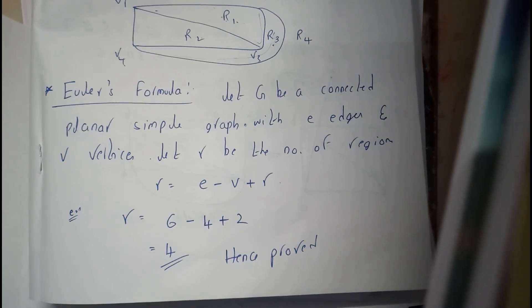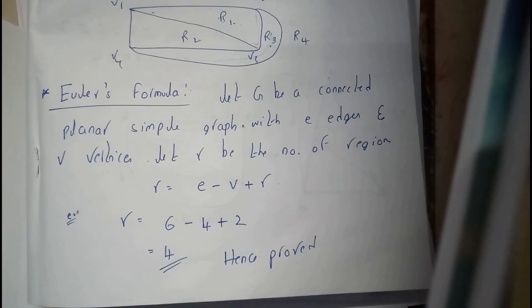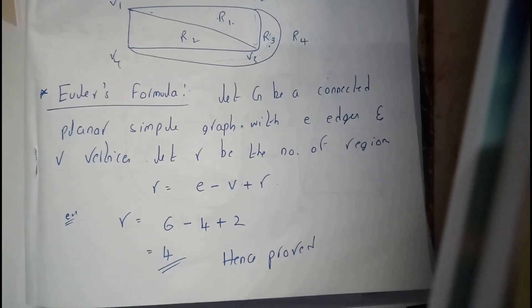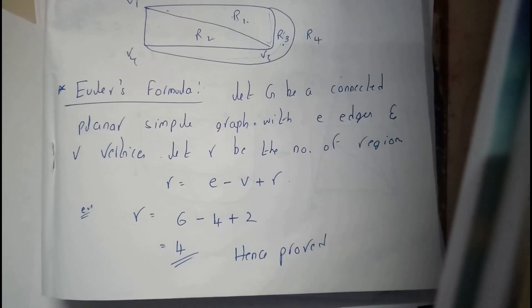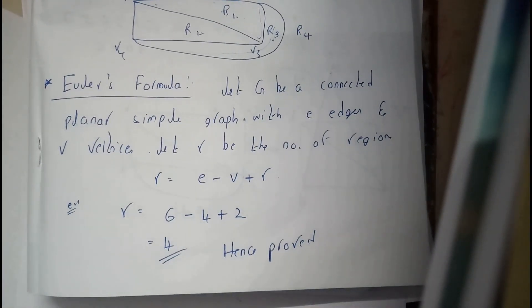In this tutorial, let's see what is Euler's formula. Let G be a connected planar simple graph with e number of edges and v number of vertices. Let R be the number of regions. Euler's formula is used for finding the number of regions in a particular graph.